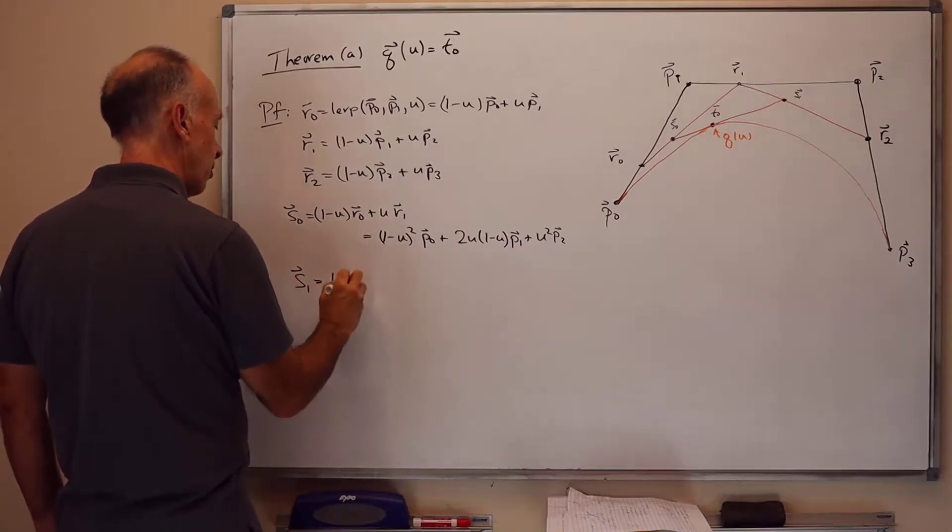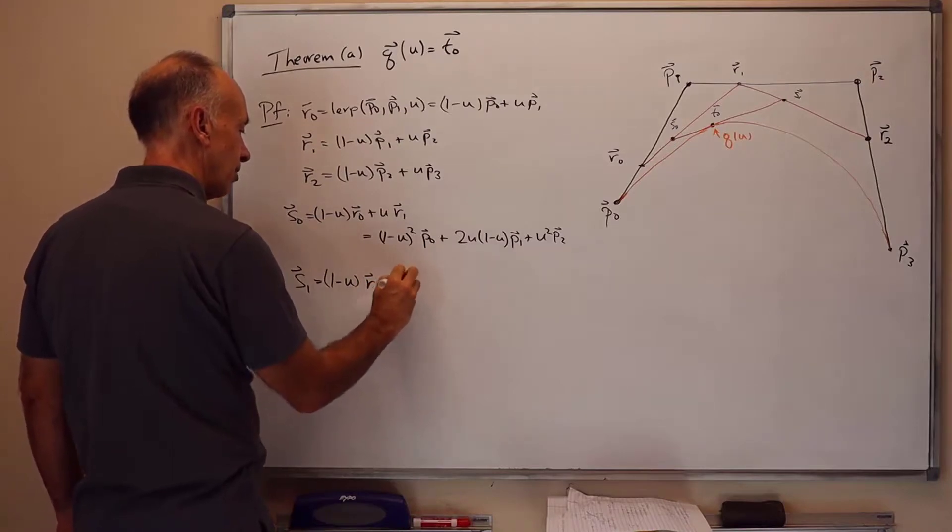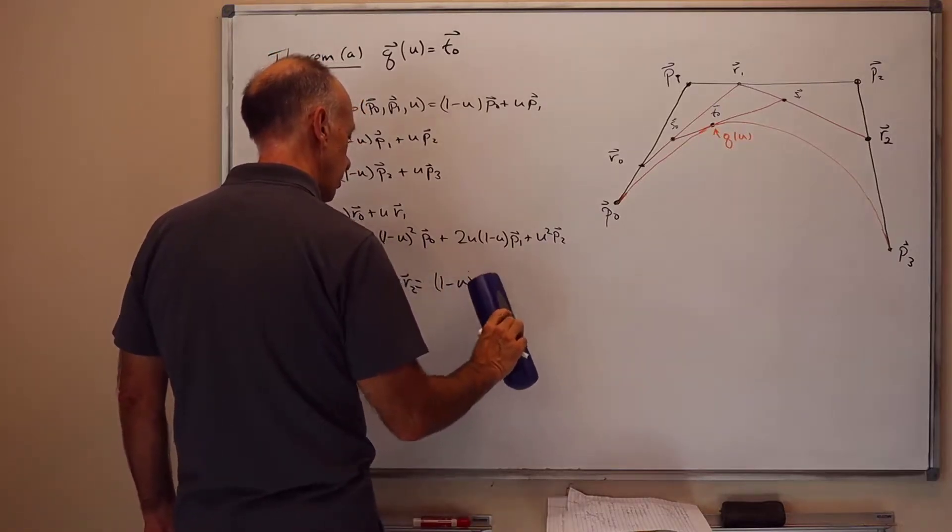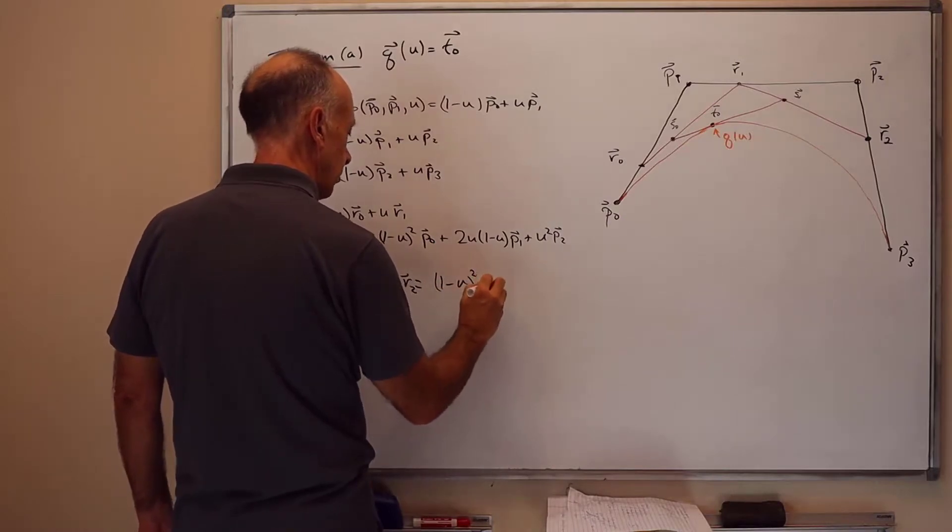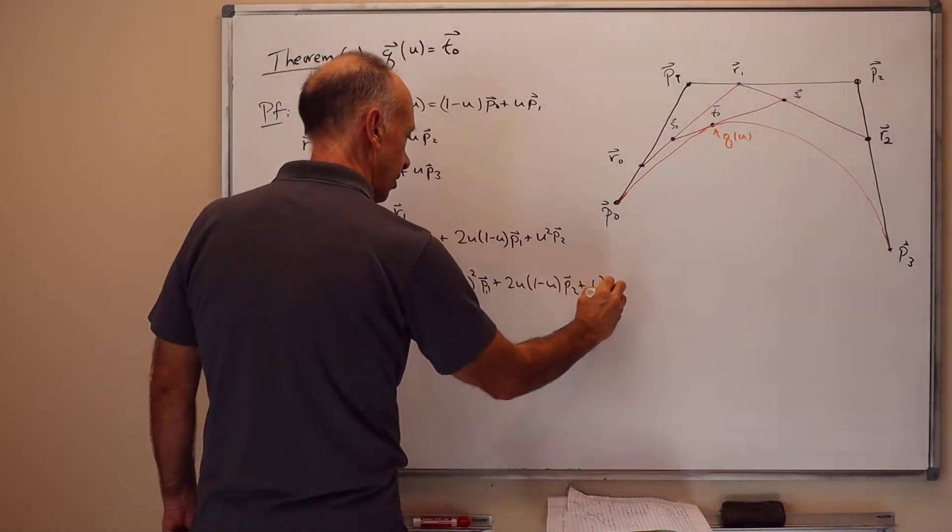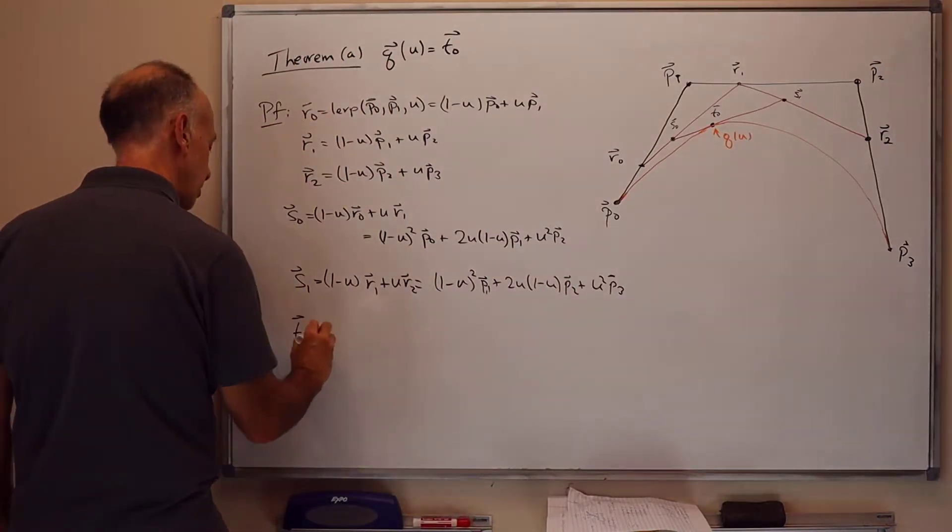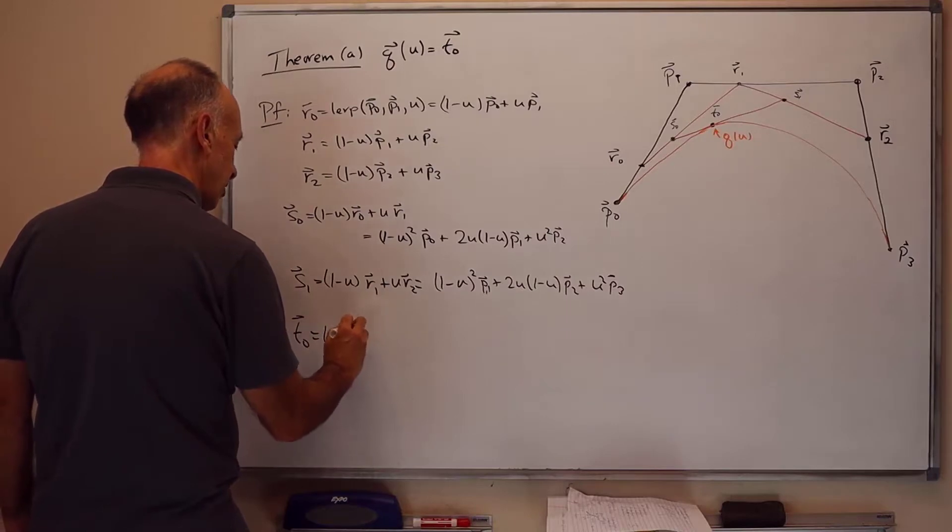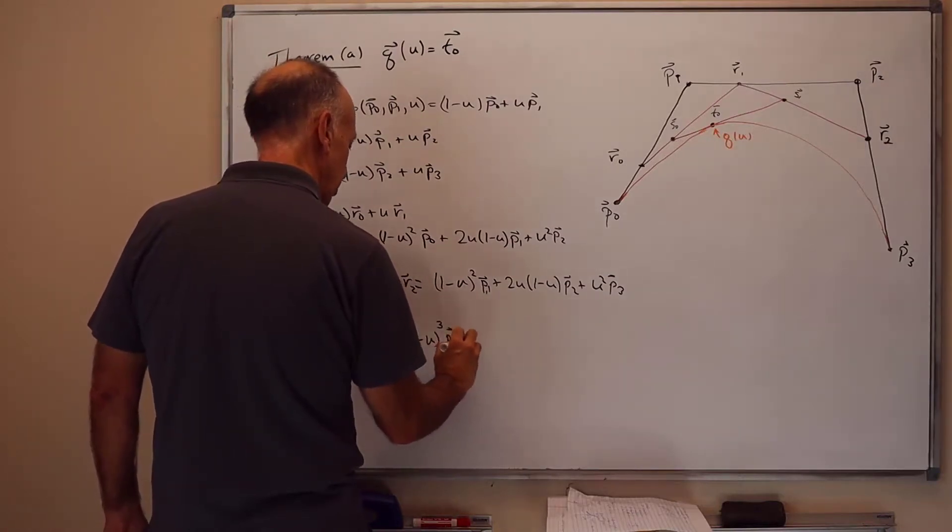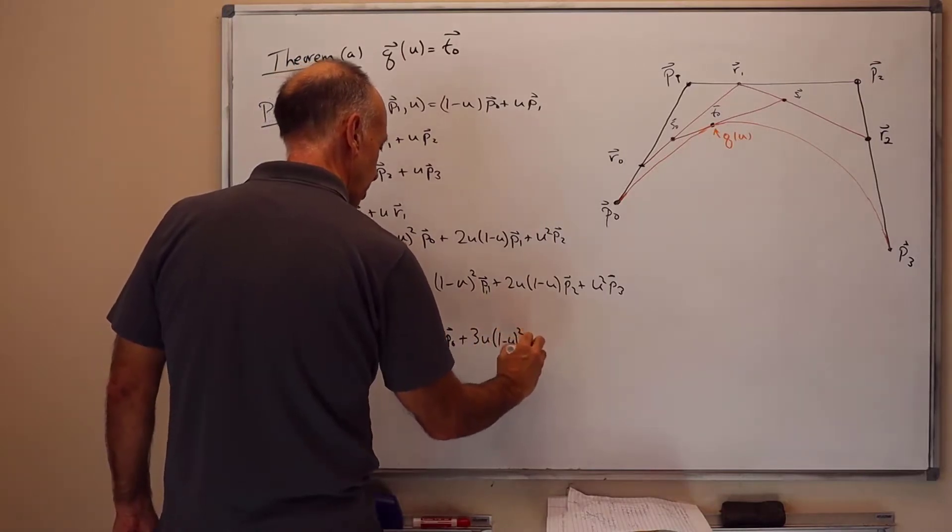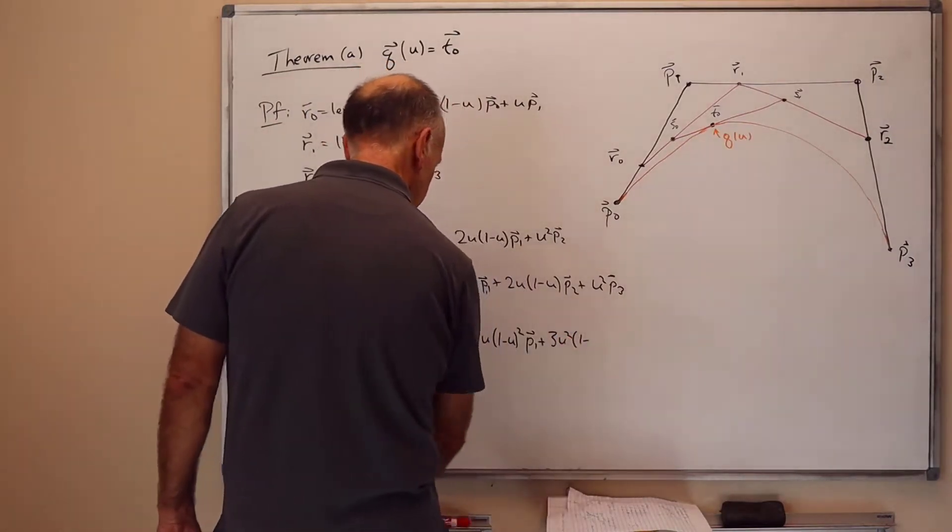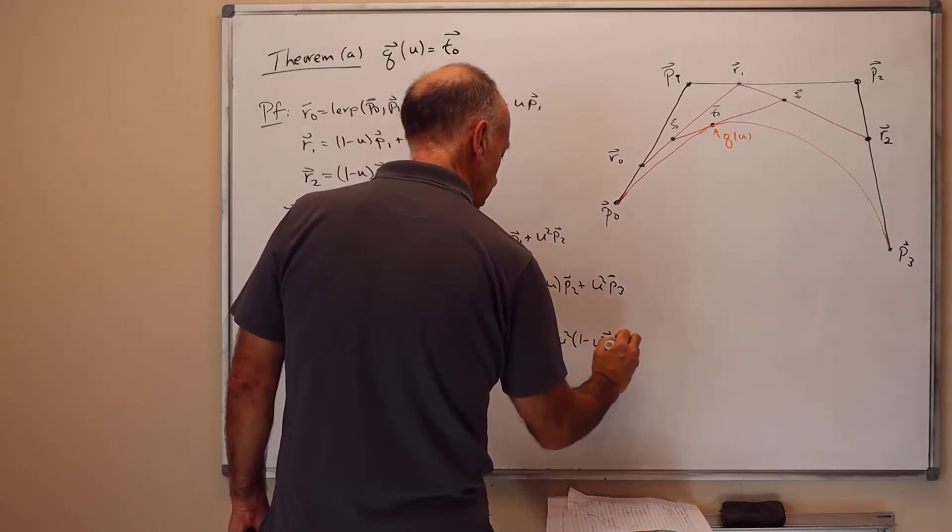So that's the formula for S0. S1 is similar. It's (1 - U) times R1 plus U times R2. And that works out to be (1 - U)^2 times P1 plus 2U times (1 - U) times P2 plus U^2 times P3. Now T0 is (1 - U) times S0 plus U times S1. And combining this all together, it's (1 - U)^3 P0 plus 3U times (1 - U)^2 times P1 plus 3U^2 times (1 - U) times P2 plus U^3 times P3.